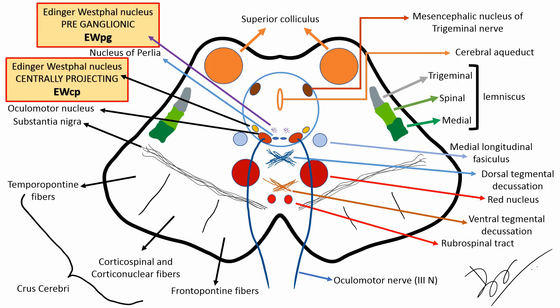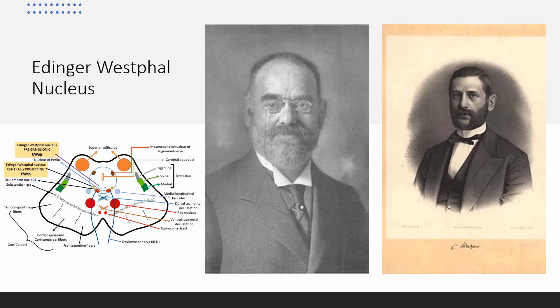Thus, to the surprise of many researchers, the Edinger-Westphal nucleus has been found to be involved in stress-related activity and regulation of alcohol and food consumption, in addition to being the final common pathway for the control of lens accommodation and pupillary constriction. The designation of Edinger-Westphal nucleus has become more confusing nowadays, because it refers to two neuroanatomically and functionally distinct neuronal populations: a cholinergic peripherally projecting motor neuron population that mediates pupil and lens control, as well as a peptidergic centrally projecting cell group with no known role in ocular function.